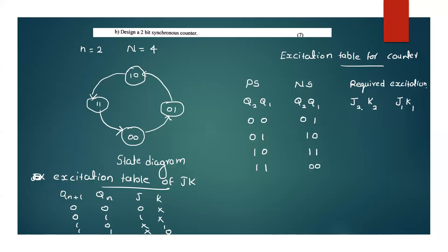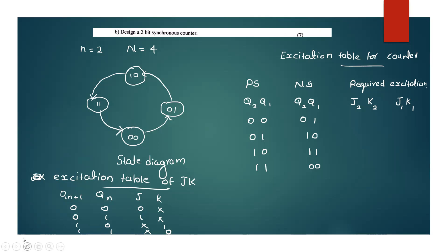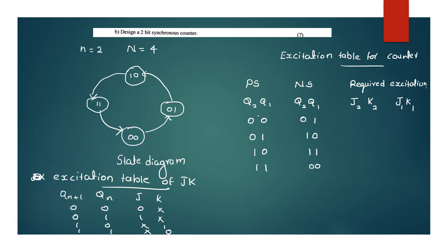Now let's add the J2 and K2 columns. I want to find the values for Q2. Looking at present state and next state values of Q2: when Q2 goes from 0 to 0, then J2=0, K2=X. When Q2 goes from 0 to 1, J2=1, K2=X.